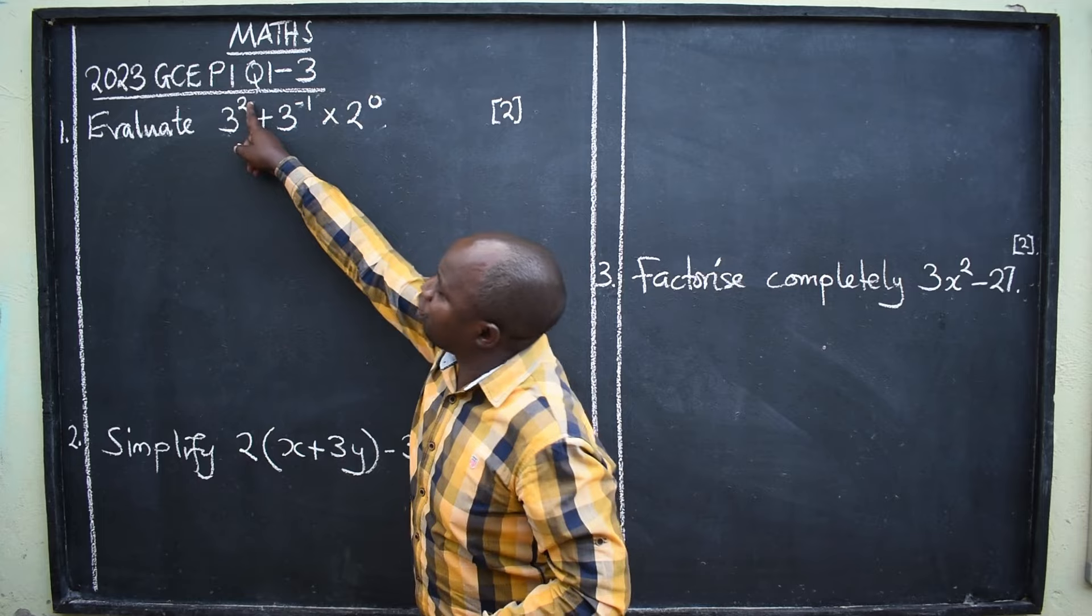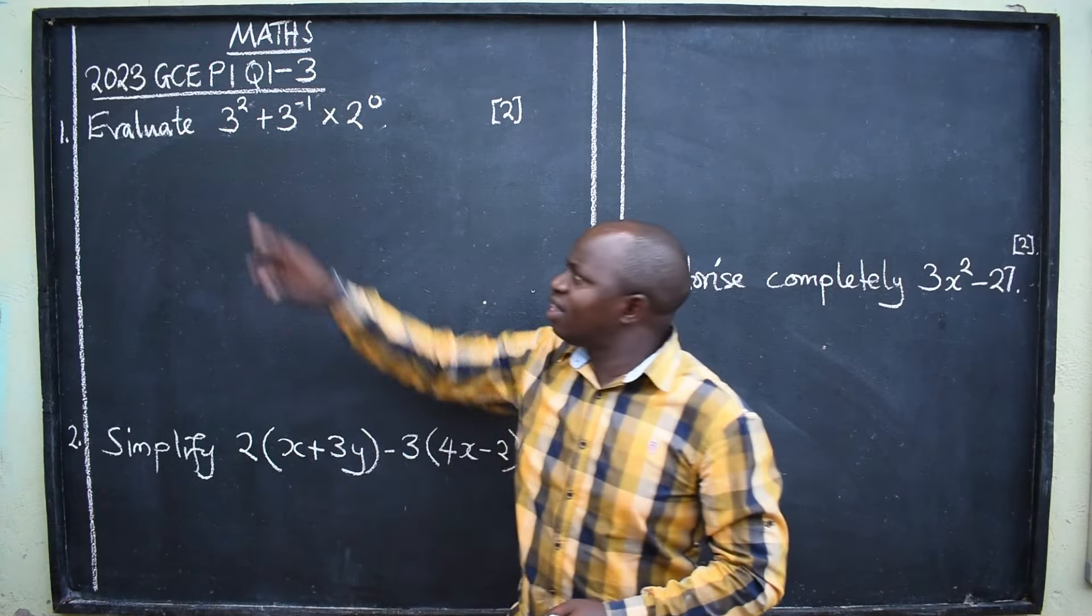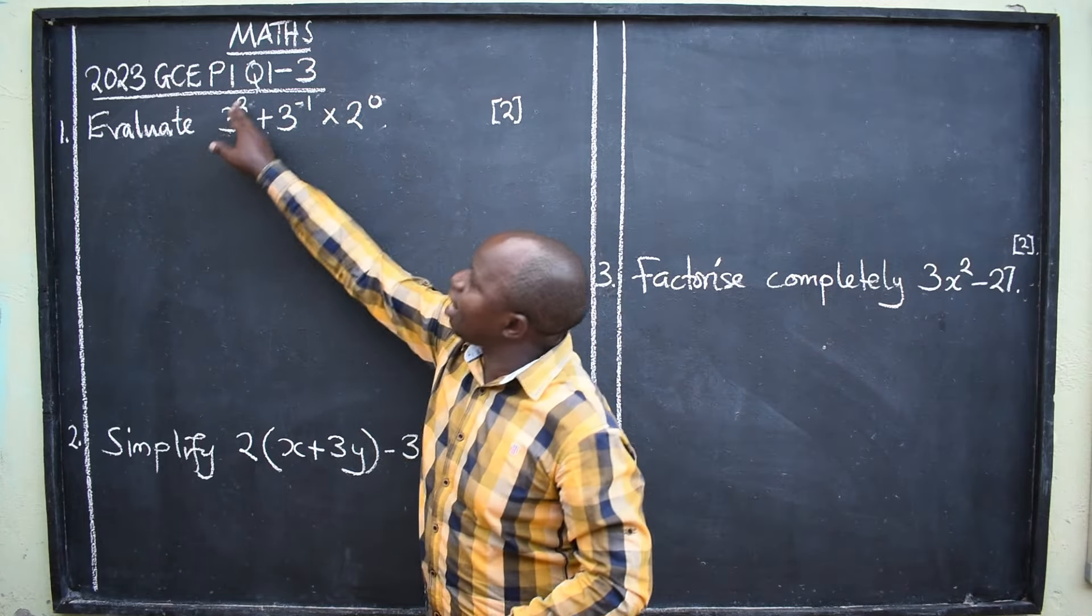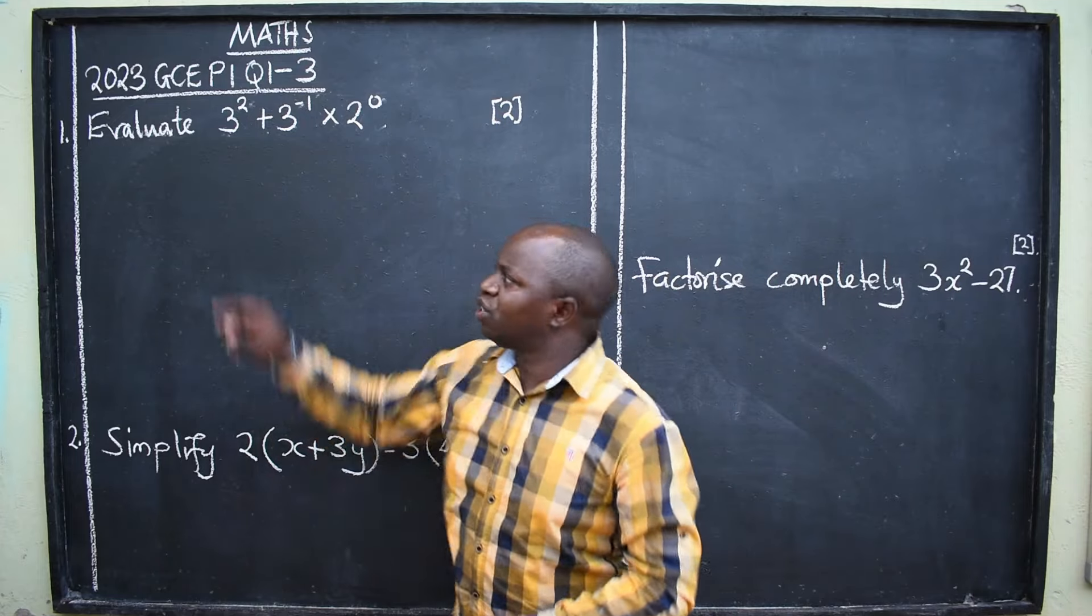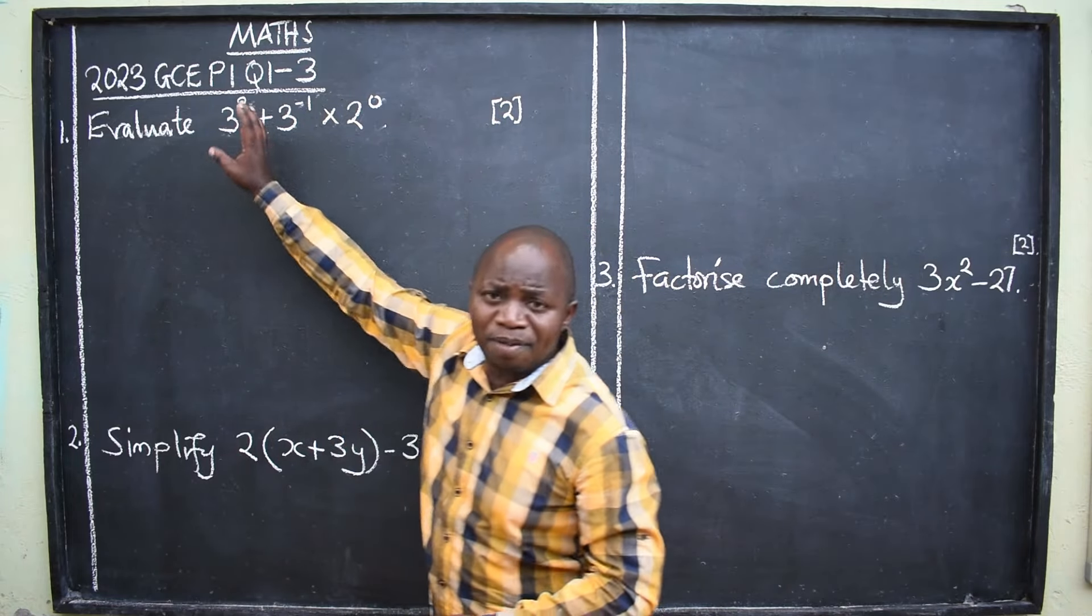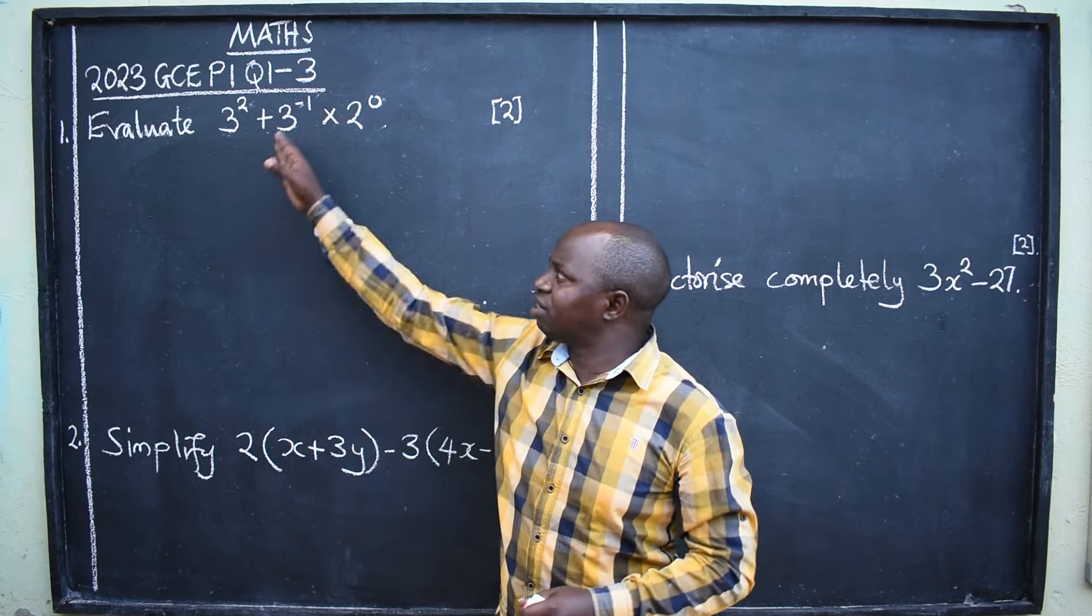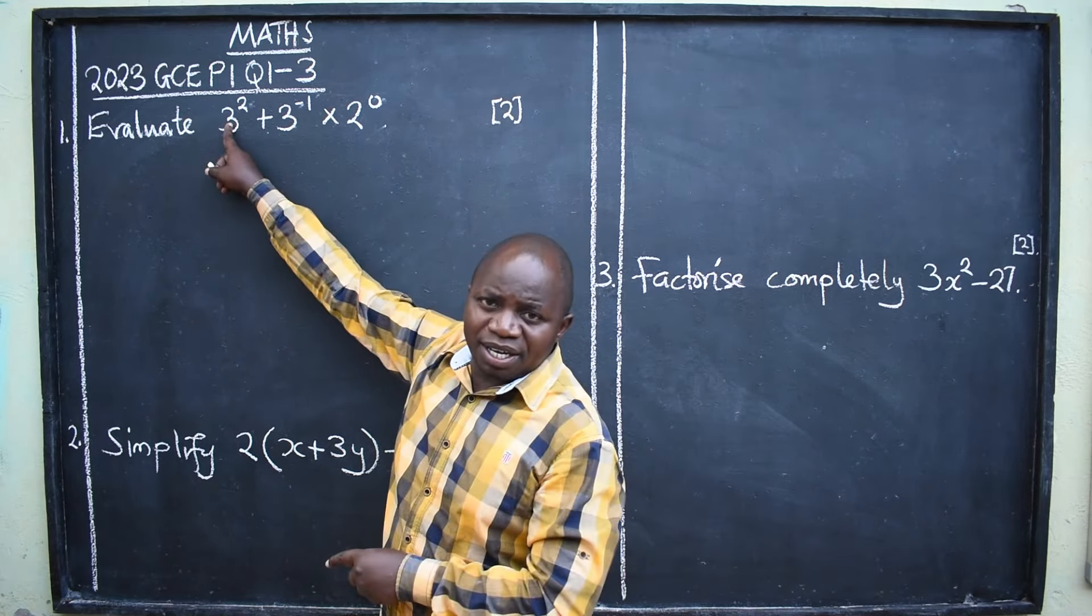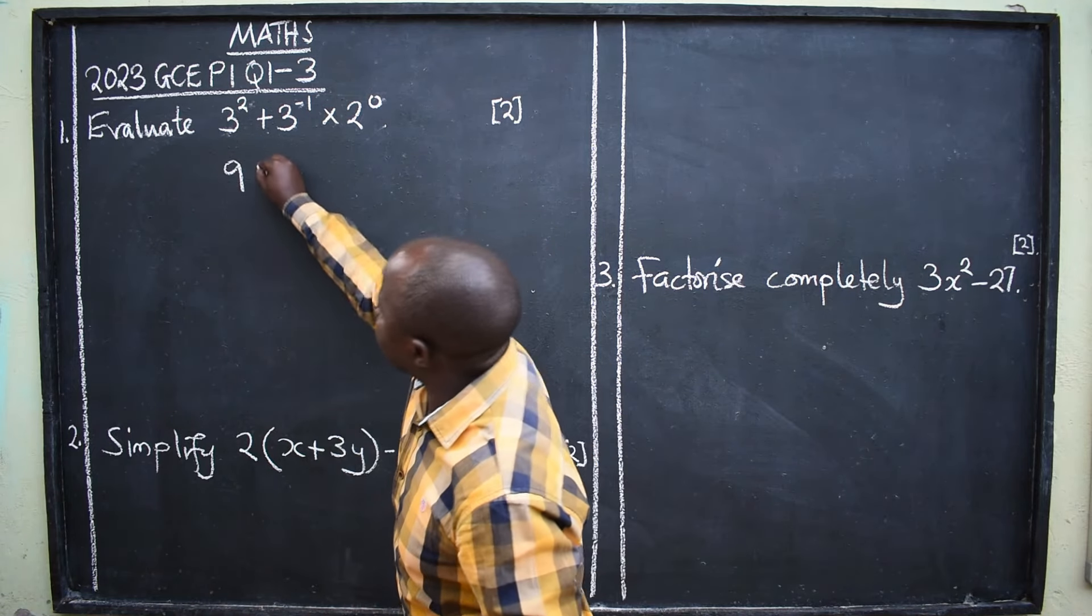Three to the power two. I see that? Three to the power two. Under indices, three to the power two does not mean three times two. No. But three times three. So this is three times three. Remember, calculators are not allowed. So you have to be very accurate in terms of answering questions. So three times three. It means nine. You write nine there. Plus.